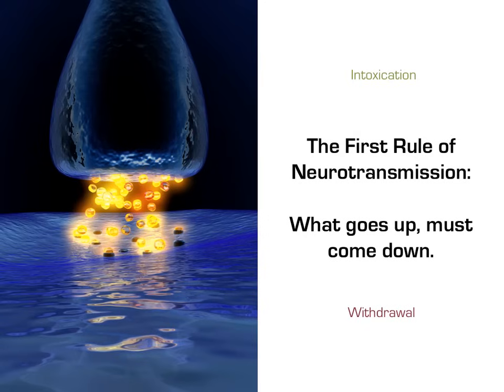The first rule of neurotransmission is this: what goes up must come down. Basically, this rule deals with the concepts of intoxication and withdrawal. Each drug has its own particular effects, which we will study in some detail. But when somebody is withdrawing from that drug, the opposite effects will often be observed. This is because the brain strives for homeostasis and will act to counterbalance any observed excesses.